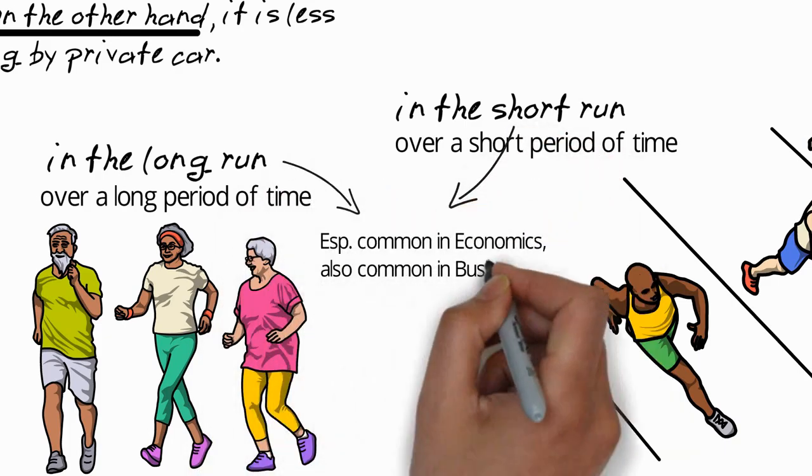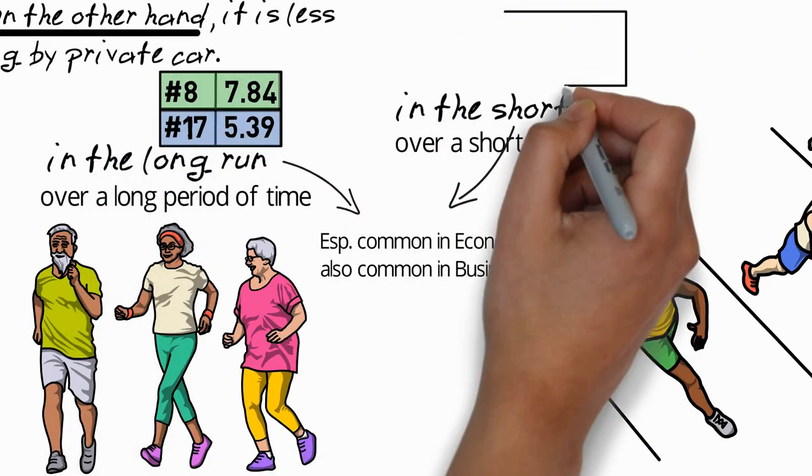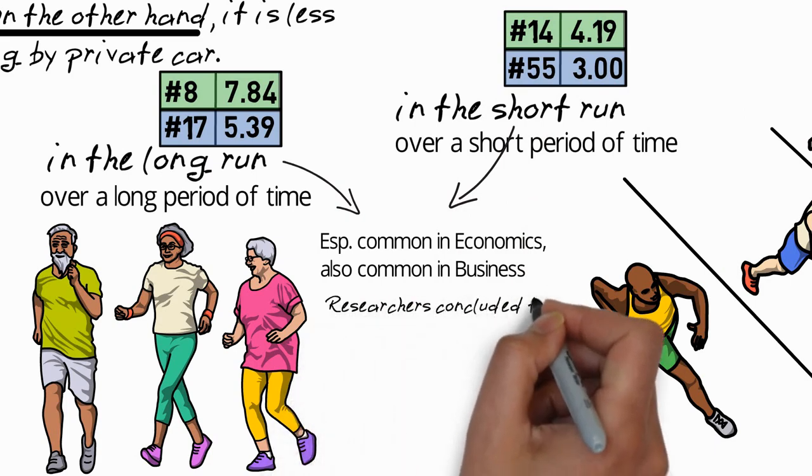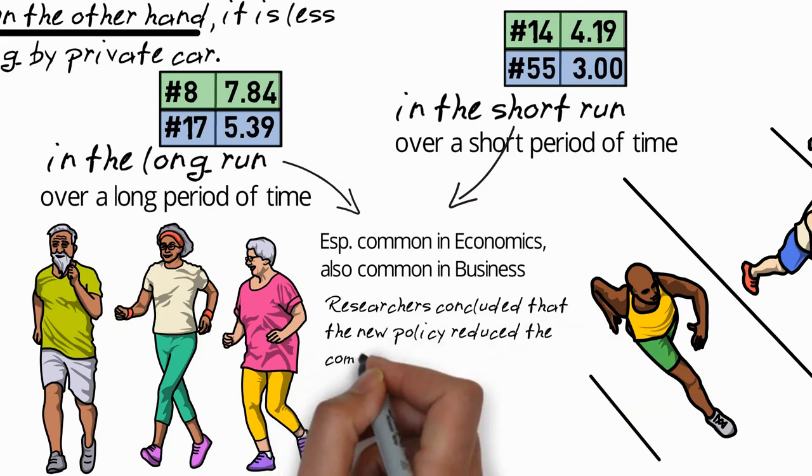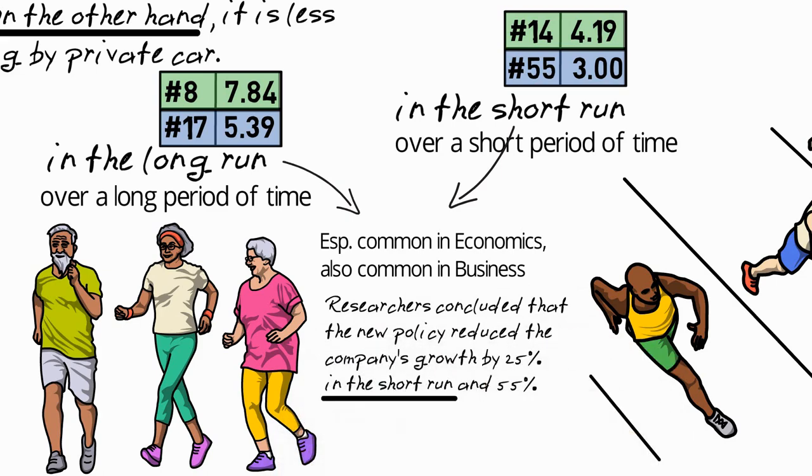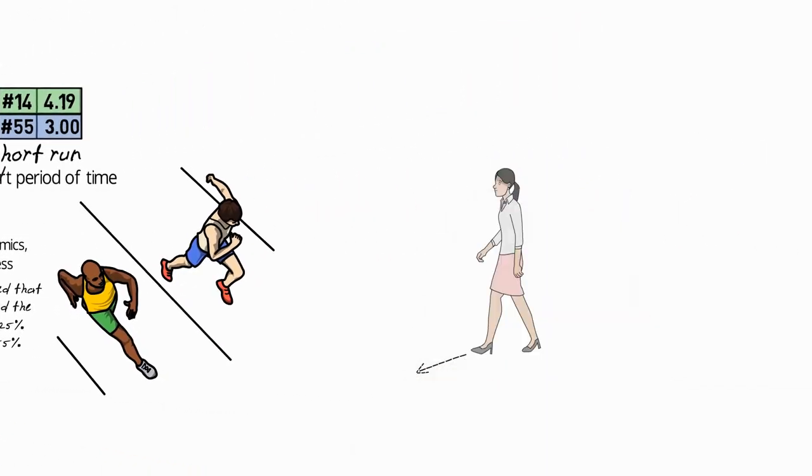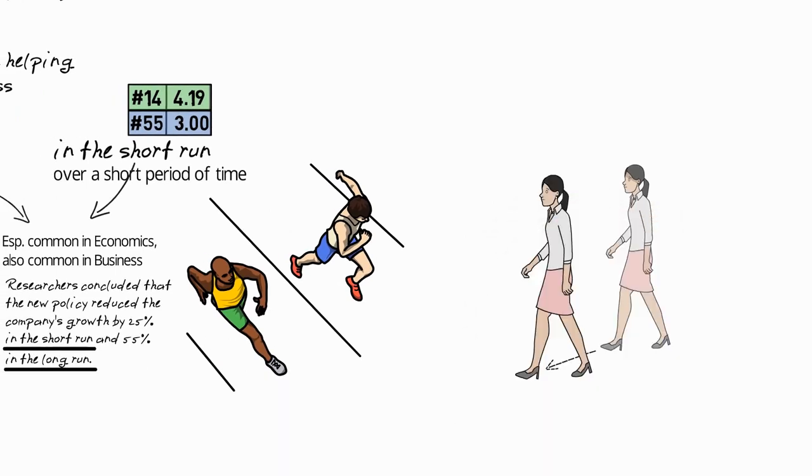These idioms are especially common in economics, although they're also common in business, with in the long run being used more frequently than in the short run, possibly because when we look at an economy or a business we're more concerned about what happens in the long run than the short run. And both of these idioms are actually more common in written academic English than spoken academic English. So for example, researchers concluded that the new policy reduced the company's growth by 25% in the short run and 55% in the long run.